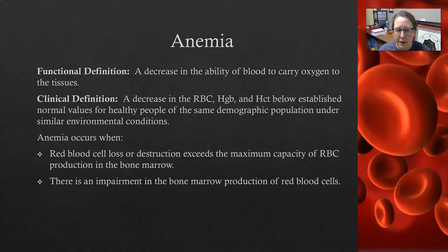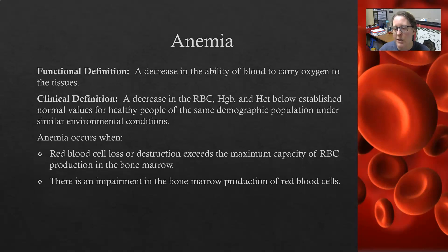An example of impairment in bone marrow production would be leukemia, where all the white cells that have grown from the leukemia have crowded out the immature red cells. They don't have enough nutrients, and so they're not able to turn out the red cells the way they're supposed to. An example for red blood cell loss is a GI bleed.